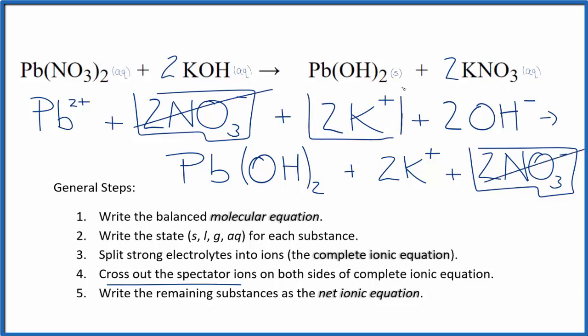Two potassium ions. Again, in the products, two potassium ions. Spectator ions. And we cross those out.